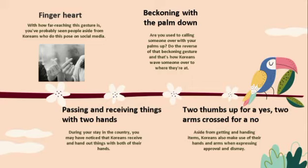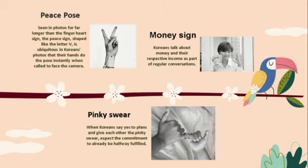The peace pose: you can see the peace gesture in photos — it is like when you take a photo with friends and raise two fingers to form a V. The peace sign is ubiquitous in Korea; Koreans instinctively raise their hands to this pose when facing a camera.